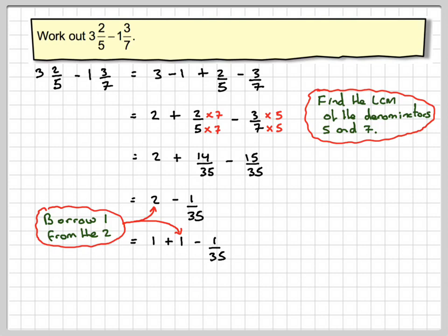1 becomes 35 over 35, take away 1 over 35. Now we can subtract the numerators: 35 minus 1 equals 34, so we get 1 and 34 over 35.